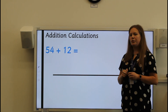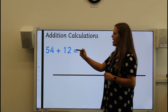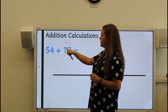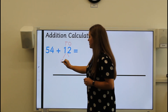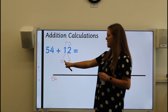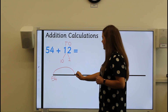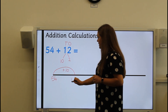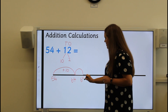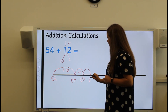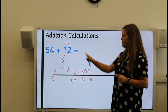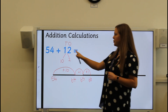Now I have got two two-digit numbers to add together, so it's a little bit trickier. We can partition our second number into tens and ones to help us so that we don't have to make as many jumps. I know that in twelve I have got one ten and two ones. I'll start by putting fifty-four at the left-hand side. Then I make a jump of ten: fifty-four add ten equals sixty-four. And then two jumps of one: sixty-five, sixty-six. So fifty-four add twelve equals sixty-six.